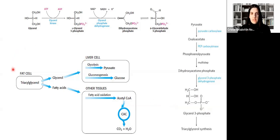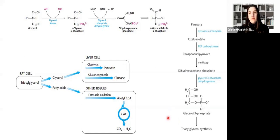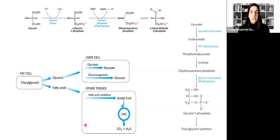In the fat cell, triacylglycerol can be mobilized, producing fatty acids that can be oxidized, linked to the production of energy. What about glycerol? Glycerol can be transformed into glycerol-3-phosphate and then dihydroxyacetone phosphate, which can be used either in glycolysis or gluconeogenesis depending on what is needed at the moment. Glycerol-3-phosphate can also be used for the synthesis of triacylglycerol.